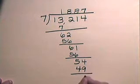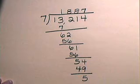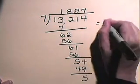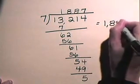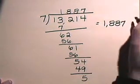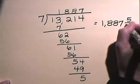7 times 7 is 49, and we subtract, leaving us with a 5. And we express our remainder as a fraction. So, 13,214 divided by 7 is 1,887 and 5 sevenths.